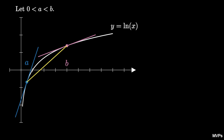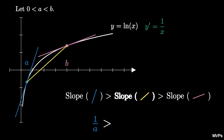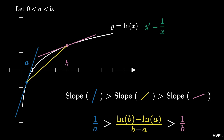Because the function is increasing and concave down and a is less than b, we conclude that the slope of the tangent line at x equals a is greater than the slope of the secant line between the two points, and in turn this slope is greater than the slope of the tangent line at x equals b. The derivative of the natural log function is y prime equals 1 over x, so the slope of the tangent line at x equals a is 1 over a, the slope of the secant line is the natural log of b minus the natural log of a over b minus a, and the slope of the tangent line at x equals b is 1 over b. The resulting inequality is Napier's inequality.